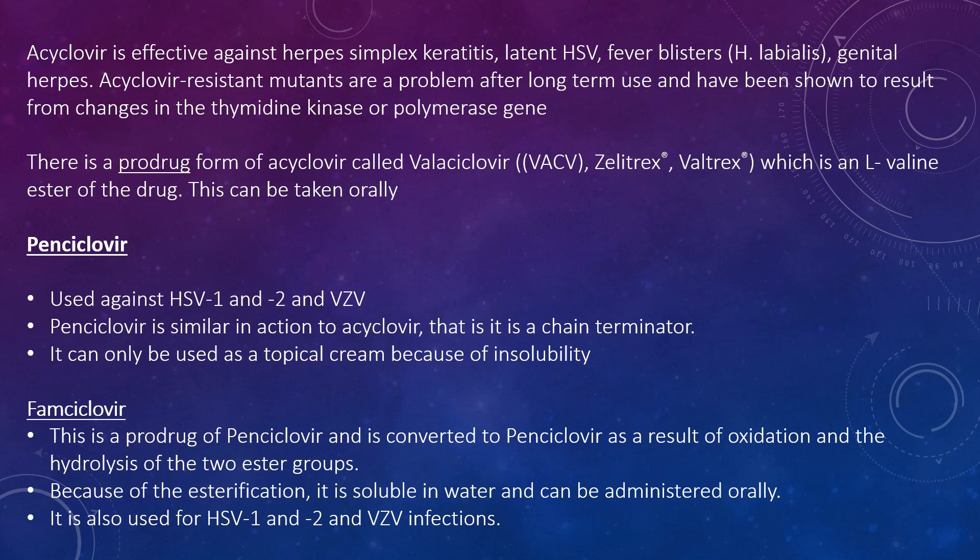Looking at penciclovir, used against HSV-1 and VZV: penciclovir is similar in action to acyclovir as a chain terminator, but it can only be used topically because of insolubility. Famciclovir is a prodrug of penciclovir and is converted to penciclovir as a result of oxidation and hydrolysis of two ester groups. Because of the ester modification, it is soluble in water and can be administered orally. It is also used for HSV-1 and VZV infections.